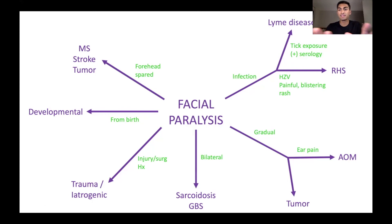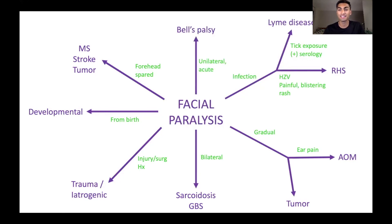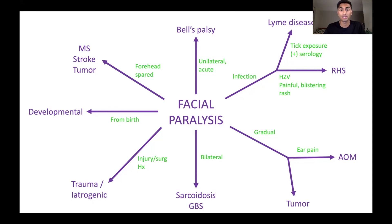But maybe none of this history or clinical presentation applies to our patient. Then we would think about Bell's palsy — it's kind of a diagnosis of exclusion. Some specific characteristics with Bell's palsy would be unilateral paralysis and also acute onset, so pretty rapidly over a couple of days. That would diagnose Bell's palsy as the cause.